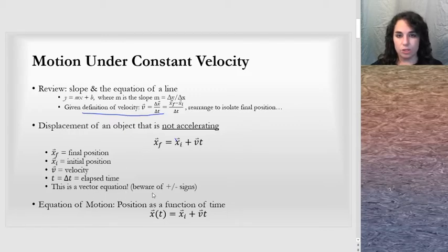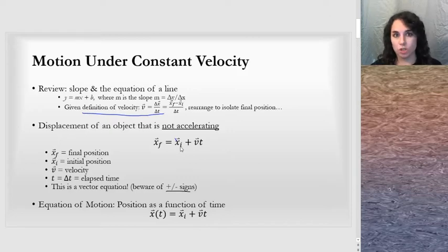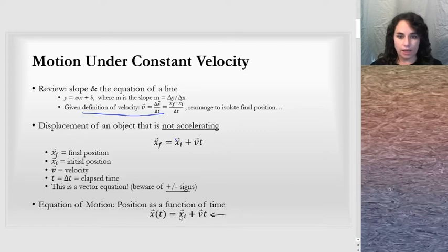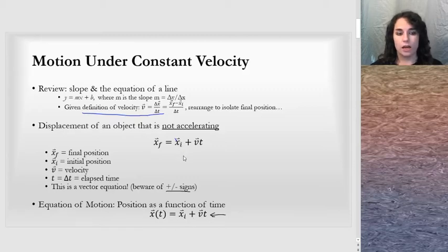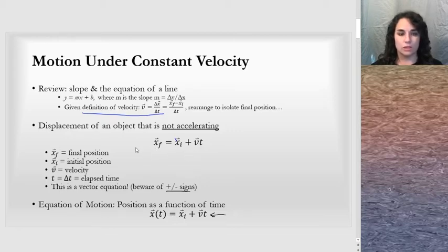This is a vector equation, so make sure you're aware of the signs that you put in there. If the velocity is in the negative direction, or if the position is in the negative direction, those are important factors. If we wanted to write the position as a function of time, just like the equation of a line, I can graph that equation. In our lesson today, we're going to look at how to create equations with this position as a function of time, and also calculate velocities or positions based on these equations.